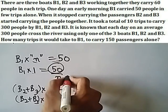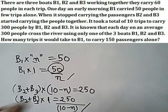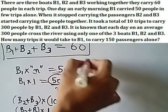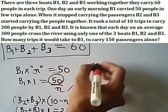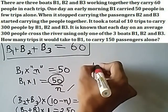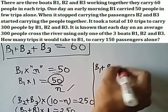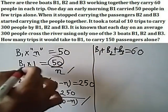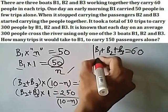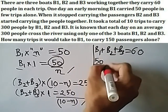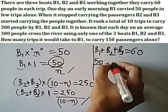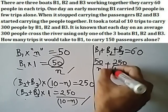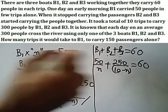Now if we put these values into the combined equation, since all three boats together carry 60 people per trip: B1 plus B2 plus B3 equals 60. So we get: 50/N plus 250/(10 minus N) equals 60.